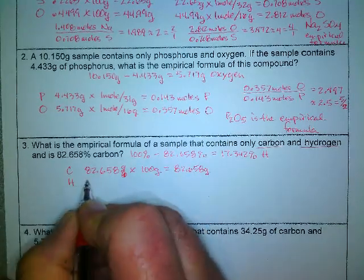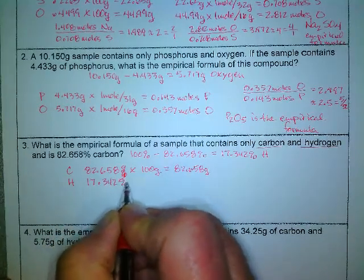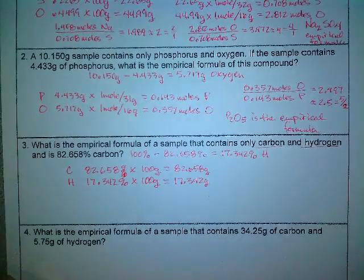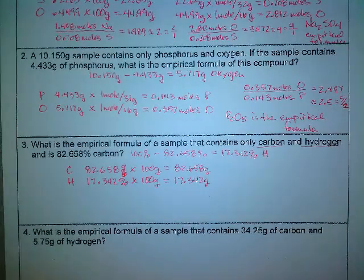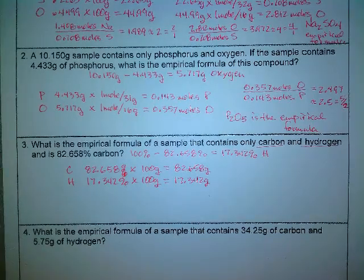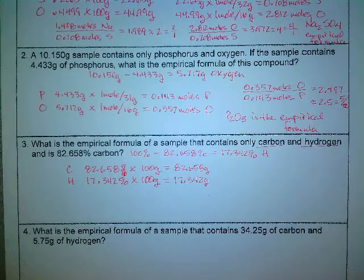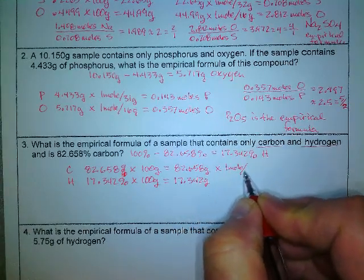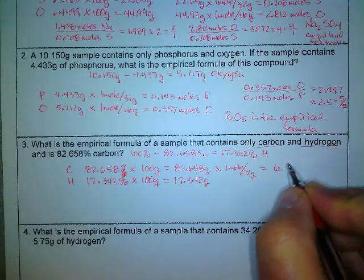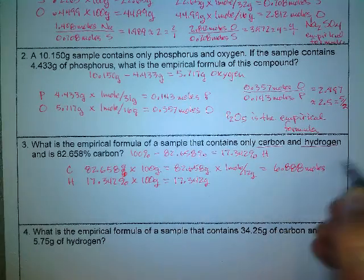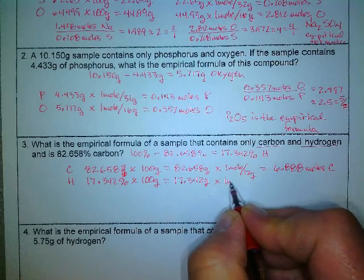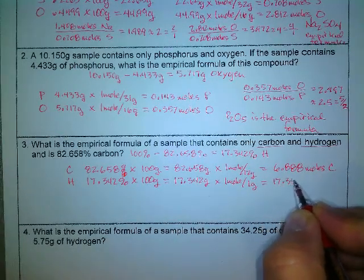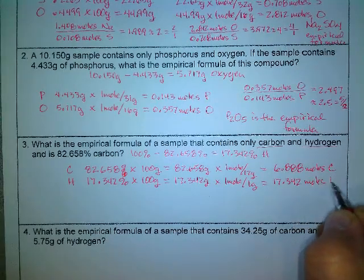Now, if they give me the gram amounts like they did in problem 2 right off the bat, I don't need to worry about this, but if they don't give me the gram amounts, if they give me percentages, this is the easiest way to get to the gram amounts. Now, just like before, go to moles, so for carbon, one mole has 12 grams, and so I have 6.888 moles of carbon, and hydrogen, of course, it's just 1 gram, so the math there is easy, 17.342 grams is 17.342 moles when it's hydrogen.